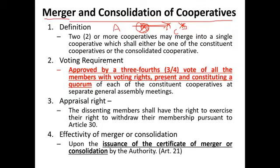Notice the voting requirement. Comparing to corporation law — in corporation law it is majority of the board of directors and at least two-thirds of the outstanding capital stock of both constituent corporations. Here in cooperative law, the required approval is three-fourths of all members with voting rights present and constituting a valid quorum of each constituent cooperative.